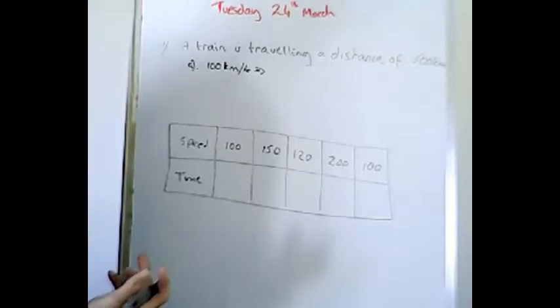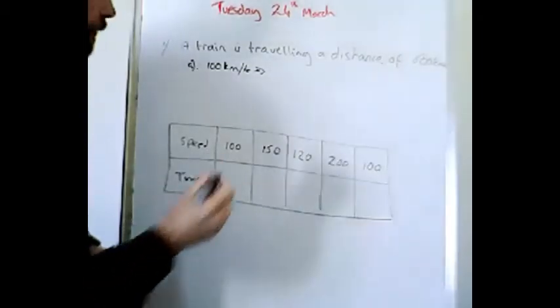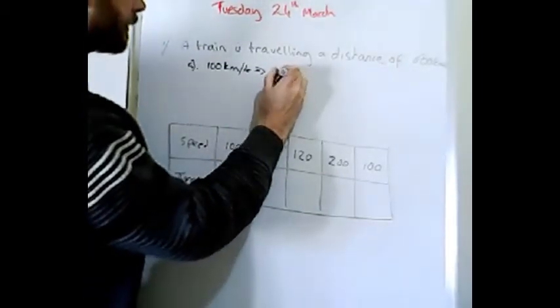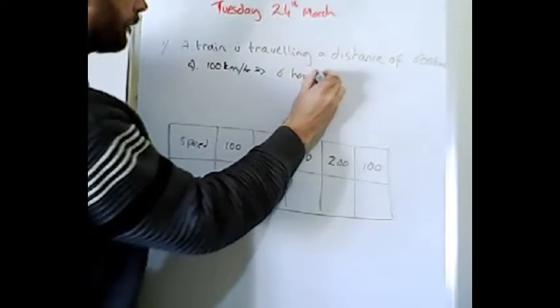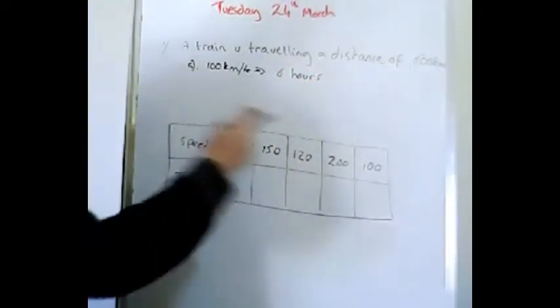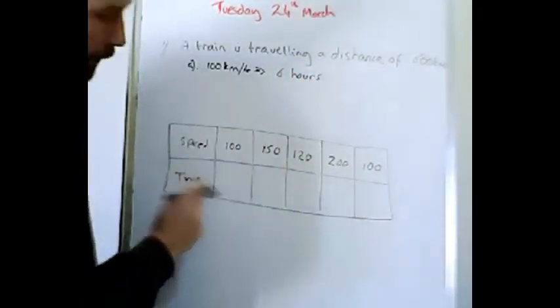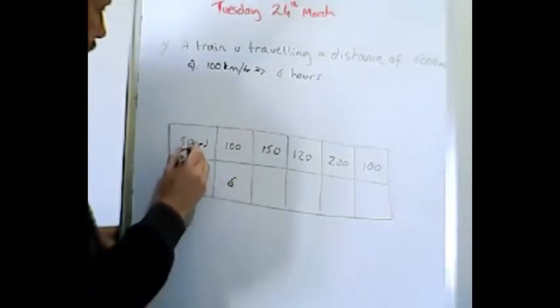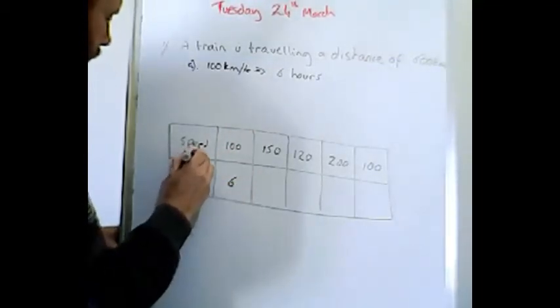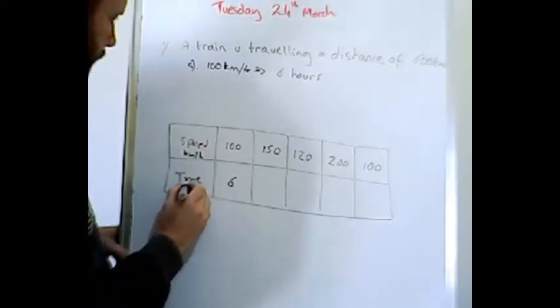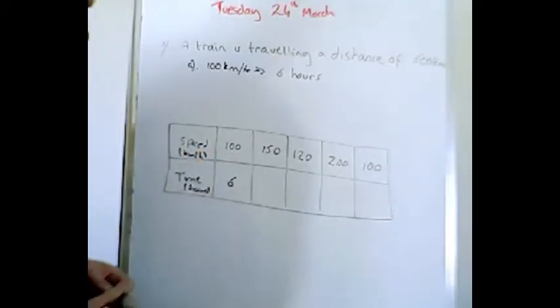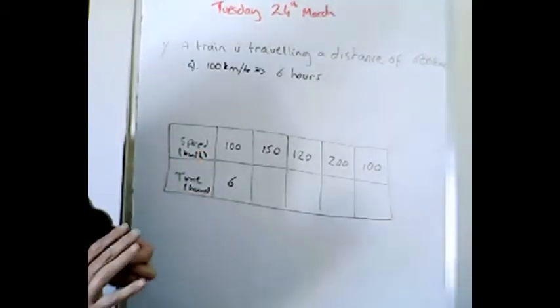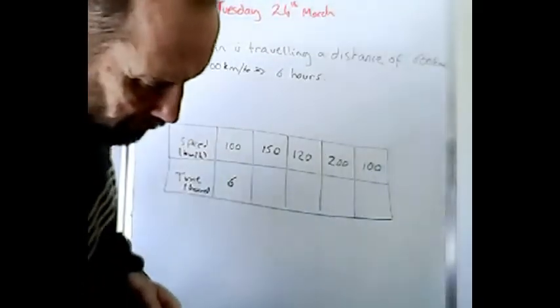Easy, straightforward. It will take six hours. So in the table underneath there we can put 100 kilometers in six hours. This is the speed in kilometers per hour and this is the time in hours. So that's straightforward, yes, I hope that's straightforward to you anyway.